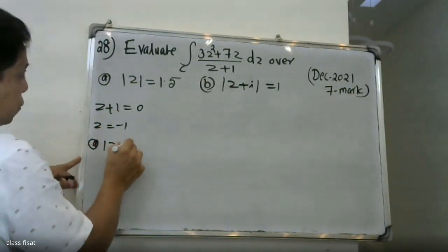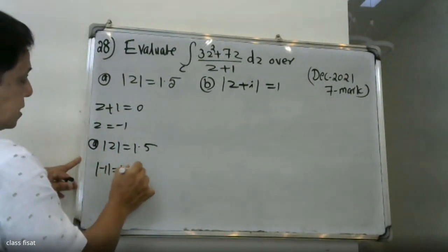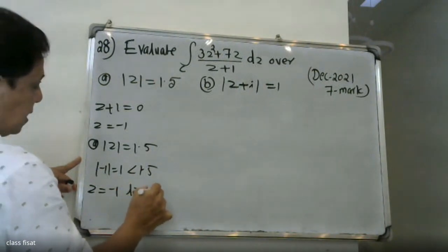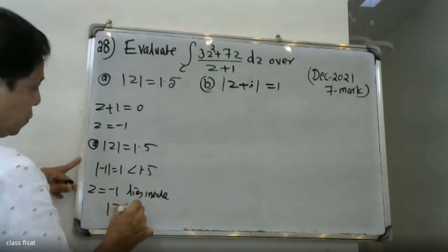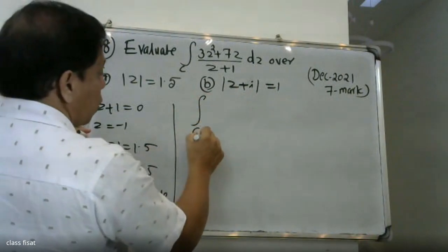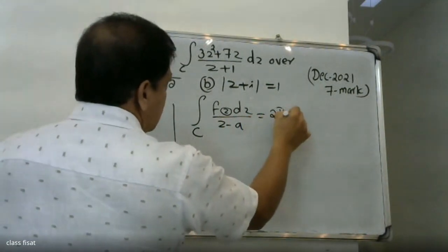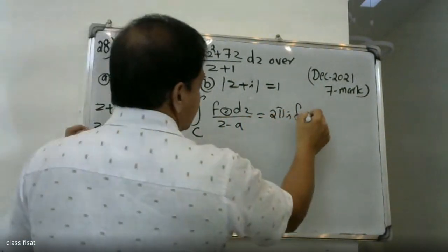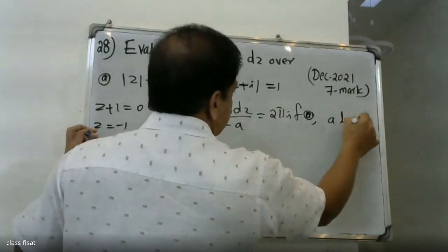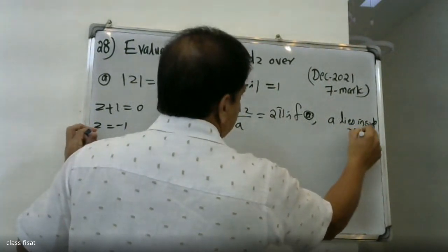We know about the region: mode |z+i| = 1.5. We said the modulus of minus one plus i — that is equal to the modulus of minus one, which is less than 1.5. Therefore |z+i| is equal to minus one, and it lies inside the region. Therefore we can apply Cauchy's integral formula: integral of C of f(z) dz over (z minus a) is equal to 2πi times f(a), where a lies inside the region C.